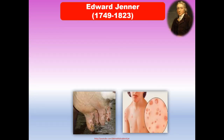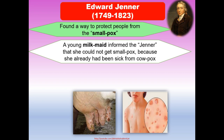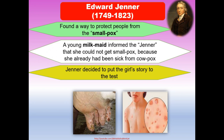Edward Jenner, a young country physician, in 1796 found a way to protect people from smallpox, a deadly viral disease. During his work, a young milkmaid informed him that she could not get smallpox because she had already been sick from cowpox, meaning the cowpox protected her from smallpox. Jenner decided to put the girl's story to the test. He collected the scrapings from cowpox blisters, then injected the cowpox scrapings into a healthy eight-year-old boy by scratching his arm with a cowpox-contaminated needle.